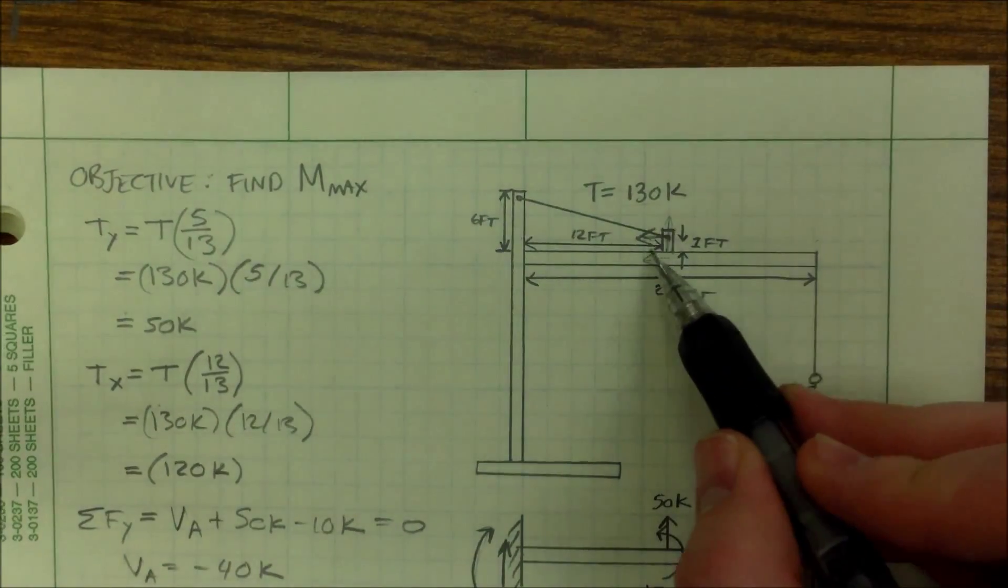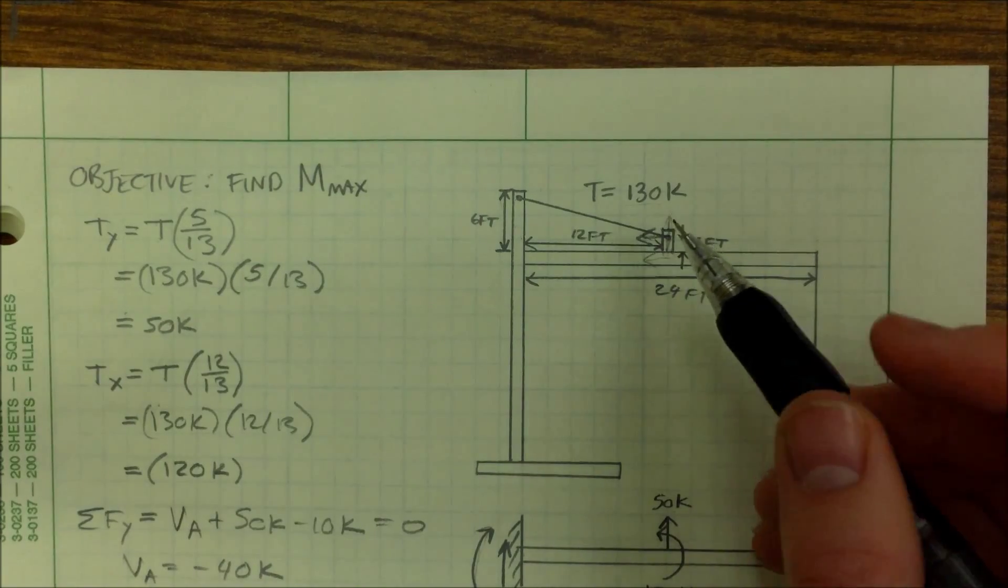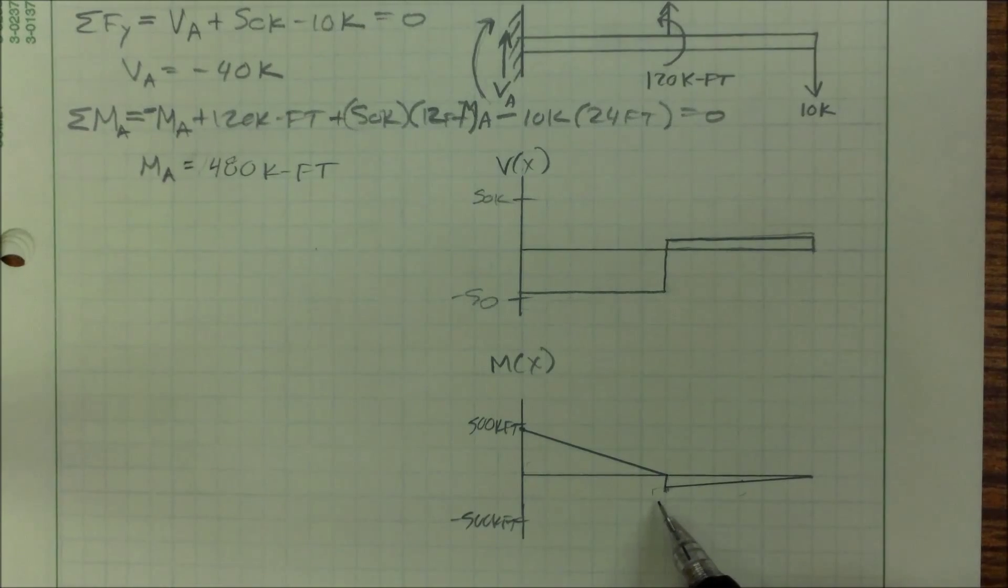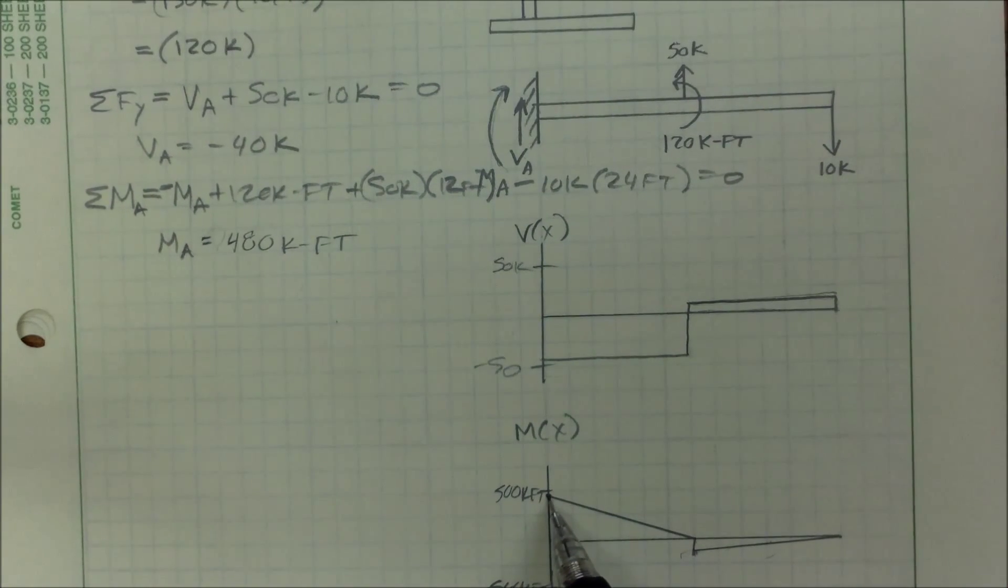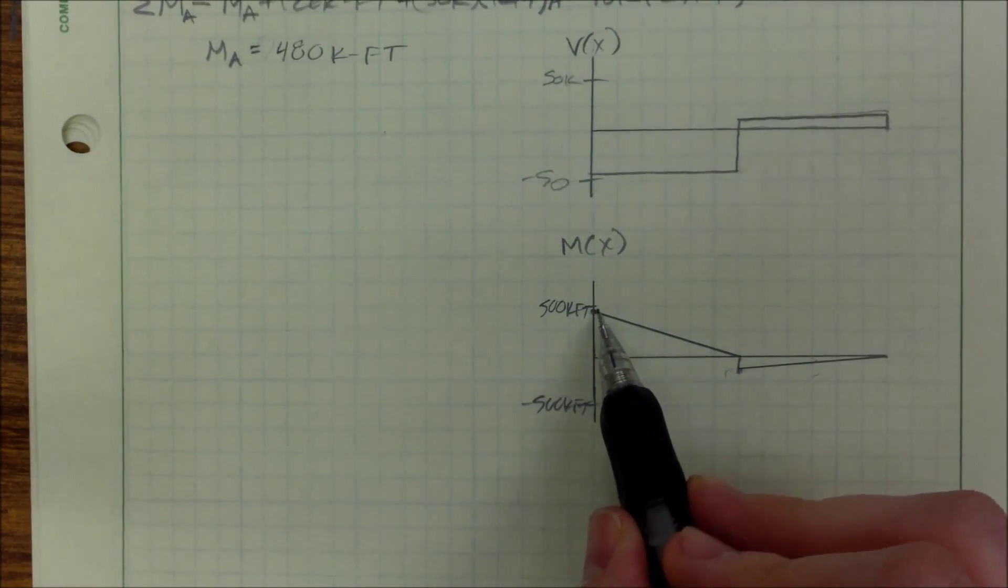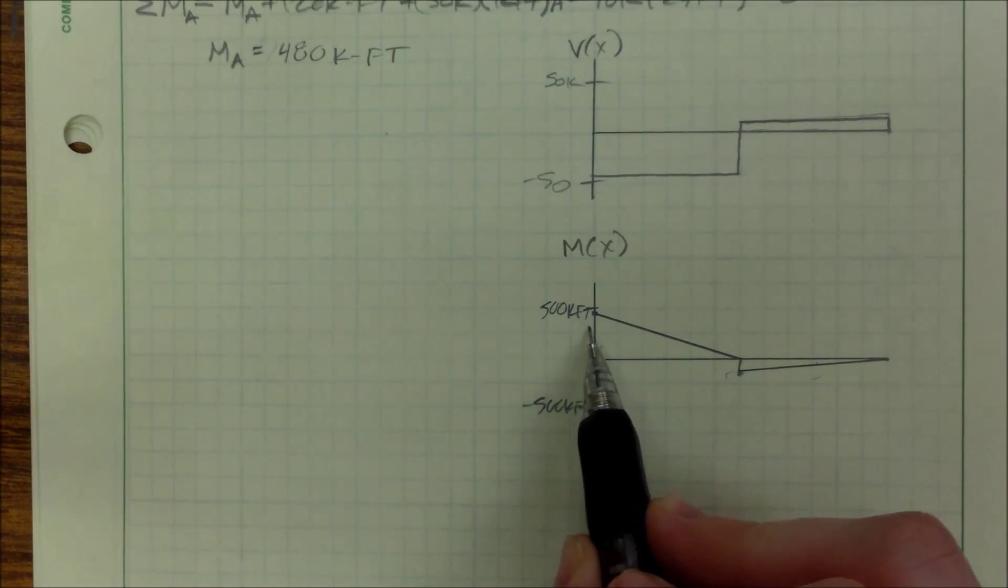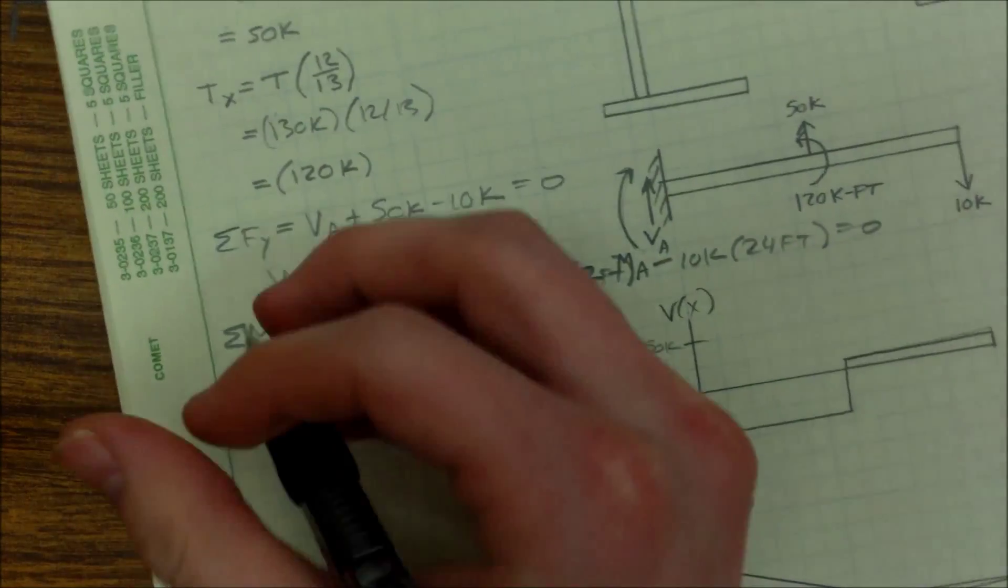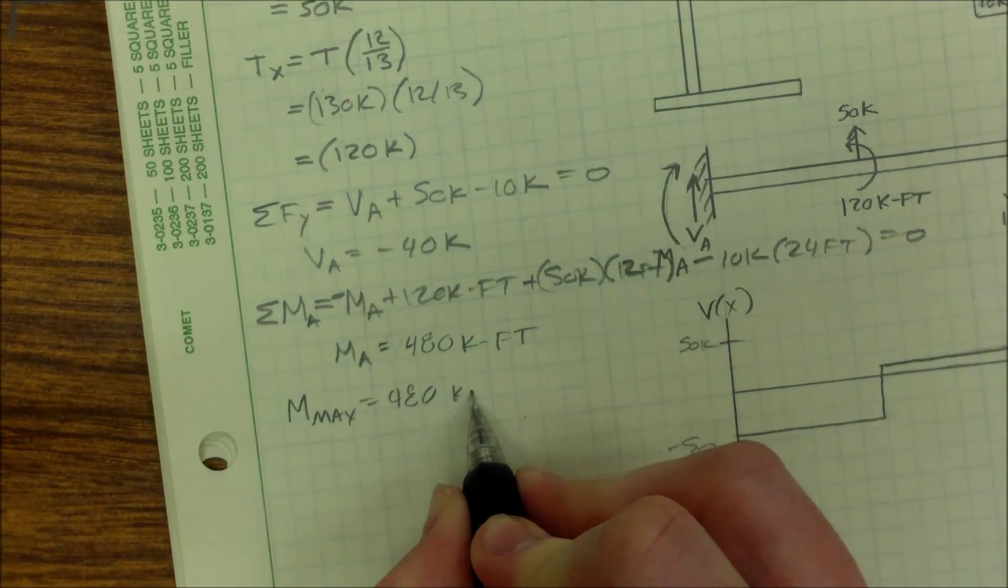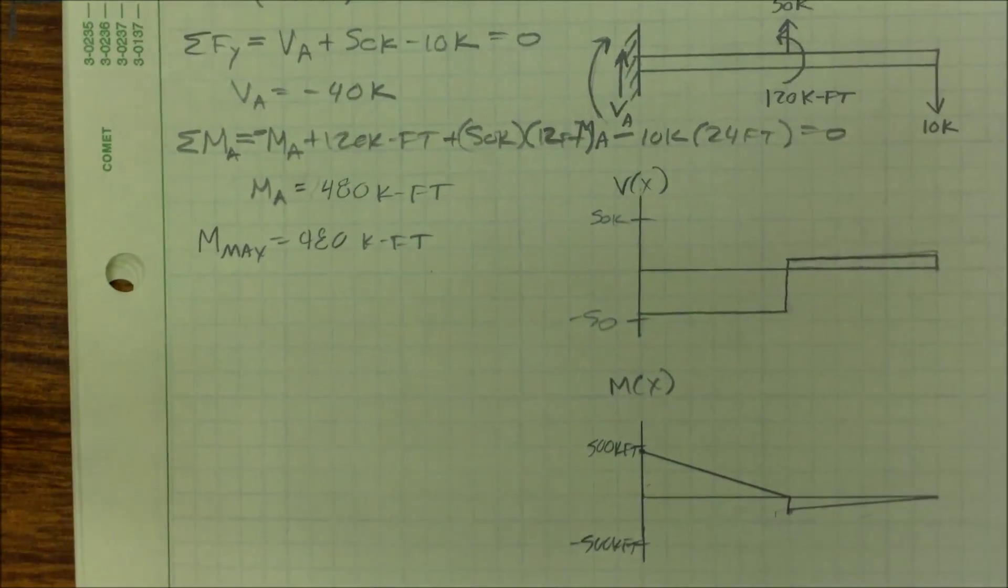Maybe if my nub here was a lot longer, then it would have been a higher moment. Therefore it would be a higher jump, and maybe it would have been even higher than this moment here. Although we can pretty easily see that our 480 kip-feet is going to be the winner. So our max moment is just going to be 480 kip-feet. And that finishes that problem.